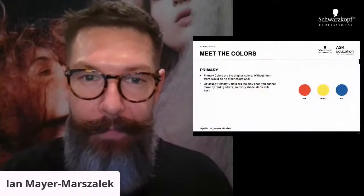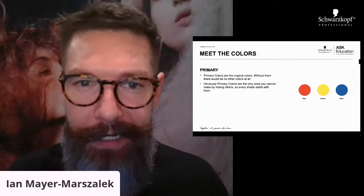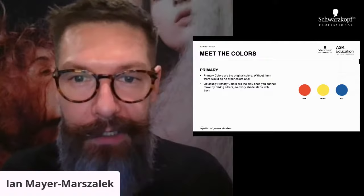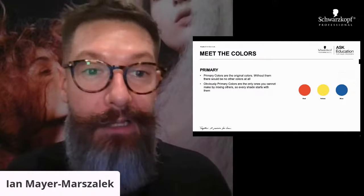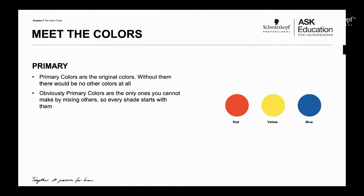First up, we're going to talk about primary colors. We learned this in primary school — first, second grade — all about colors. Primary colors are the colors that pretty much make up everything in this kind of color setup. These are colors that can't be made. You can't make blue. However, you can make other colors with what we've got. Think of these as the OGs — without them, we wouldn't have any other color.